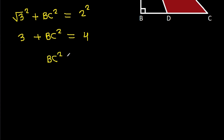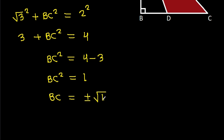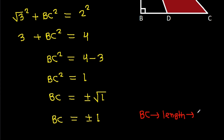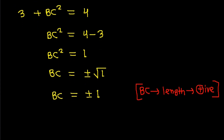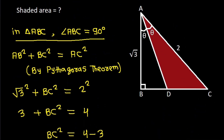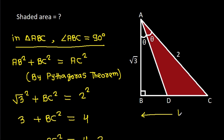BC² = 4 - 3, so BC² = 1. Therefore BC = ±√1 = ±1. But since BC is a length, it must be positive, so BC = 1.